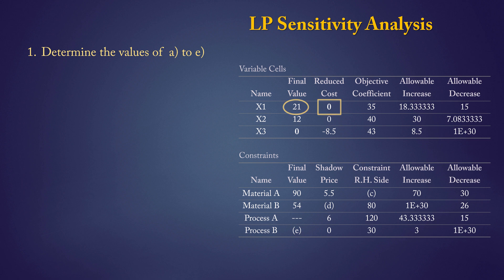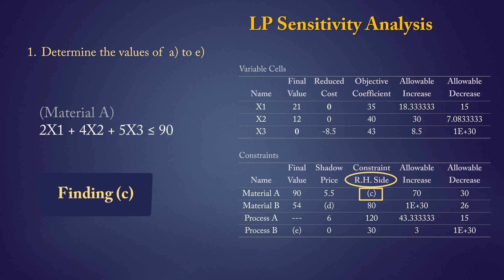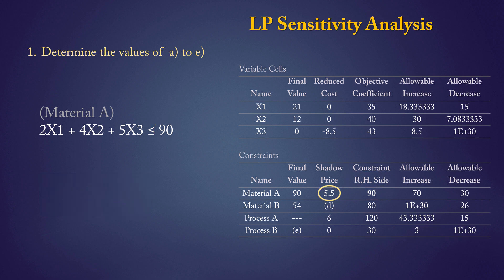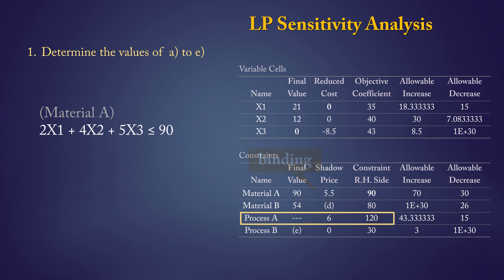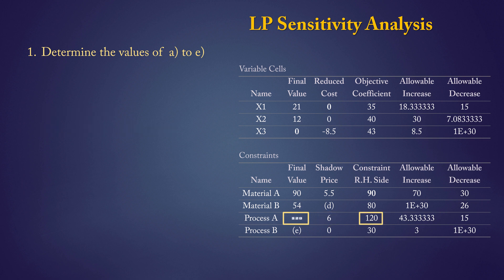For C, we require the right-hand side of the material A constraint, which is given in the LP model as 90. Alternatively, we see a non-zero shadow price, indicating that the constraint is binding — the left-hand side equals the right-hand side at optimal solution. Similarly, for process A, since the shadow price is non-zero, it is binding. Therefore, the missing value equals the right-hand side value of 120.